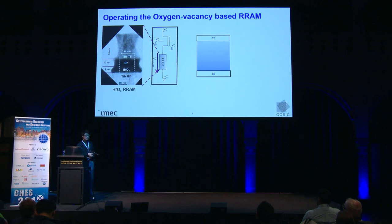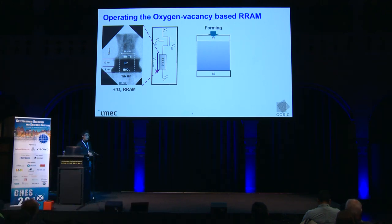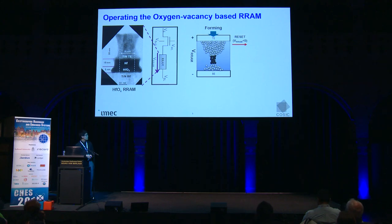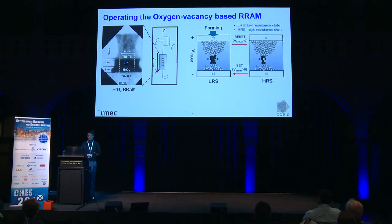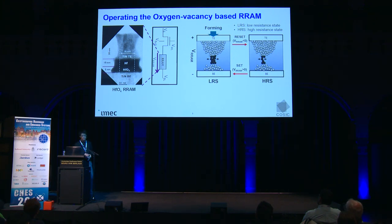We begin with a fresh ReRAM, which has only a dielectric and is very high resistance — not conducting current. A forming stress introduces a conductive filament in this dielectric and it starts conducting with lower resistance. We apply a negative reset voltage, which pushes the conducting vacancies back to the electrodes and shrinks the filament, increasing resistance to a high-resistance state. Then applying a positive set voltage increases the filament again, returning to the low-resistance state. Data can be stored in these two states.